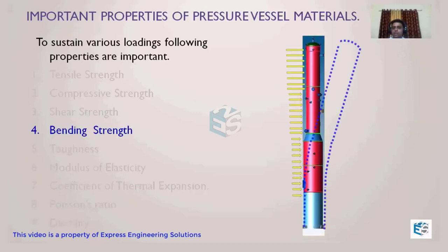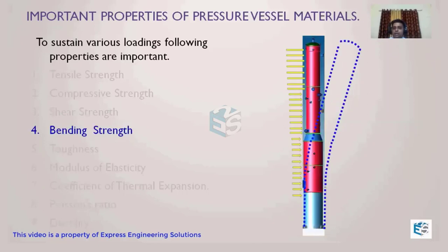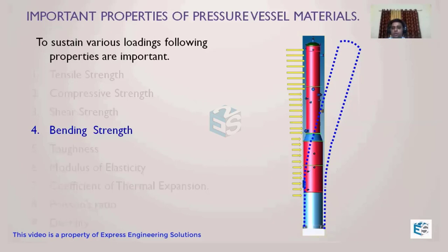Bending strength is also important — when wind load is applied, bending deformation occurs in the vessel column. The vessel should be able to regain its original position and have enough strength to handle such loading. Shear strength and bending strength are both expressed in terms of yield strength: shear strength is approximately 0.4 times yield strength, and bending strength is 0.66 times yield strength.